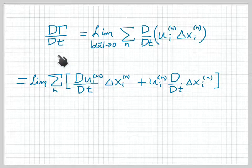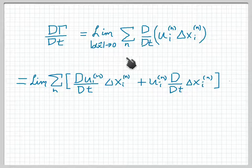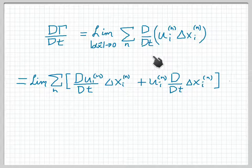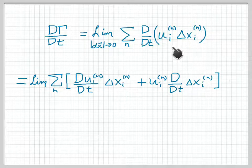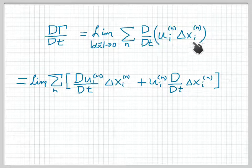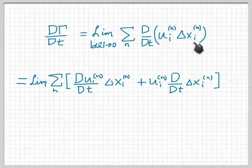So just to summarize, dΓ by dt equals the limit of the sum of d by dt of ui Δxi, and you'll notice now that I've written the vectors u and Δx in index notation. So i is a dummy variable that gets summed over.